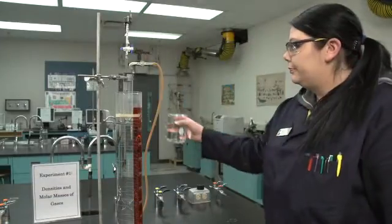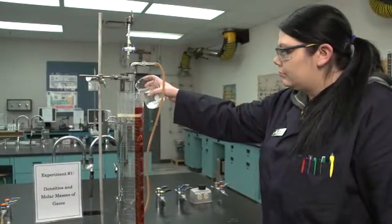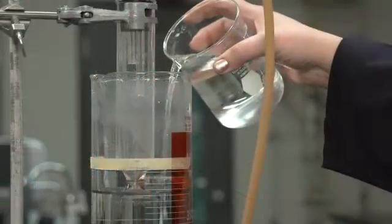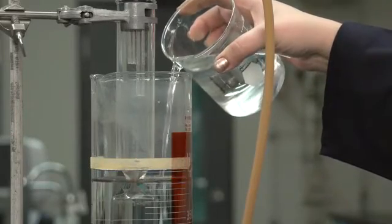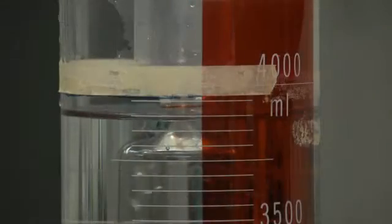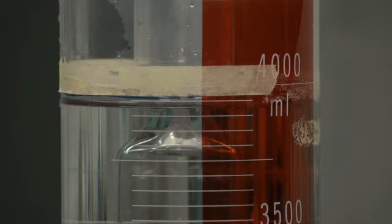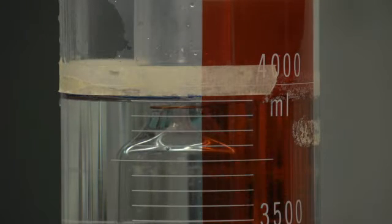The first step is to adjust the water level to the bottom of the tape. This is important because during the experiment, water might spill out of the graduated cylinder. The same amount of water must be present at all times so that the hydrostatic pressure is the same for every run.